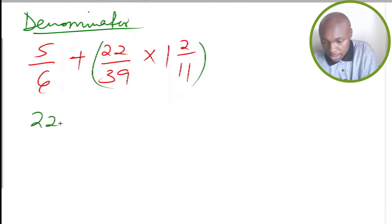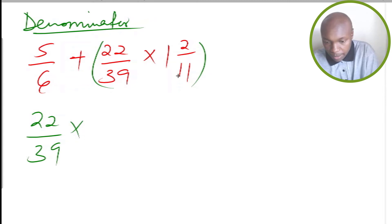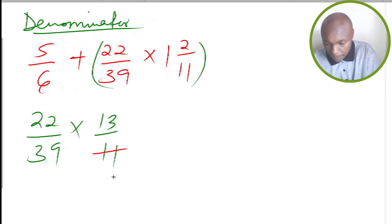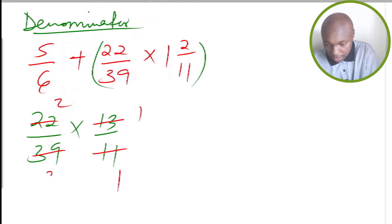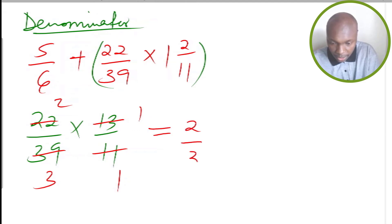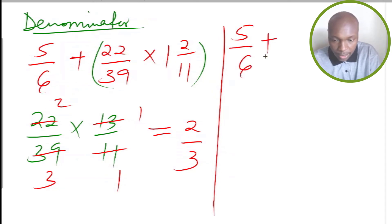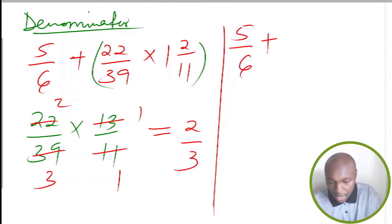So we evaluate 22 over 39 multiplied by 1 and 2 over 11. Converting 1 and 2 over 11 to an improper fraction gives 13 over 11. The common factor is 11: 11 divided by 11 is 1, and 22 divided by 11 is 2. We also simplify 39 by 13: this gives 2 over 3. That is the result of 22 over 39 multiplied by 1 and 2 over 11.